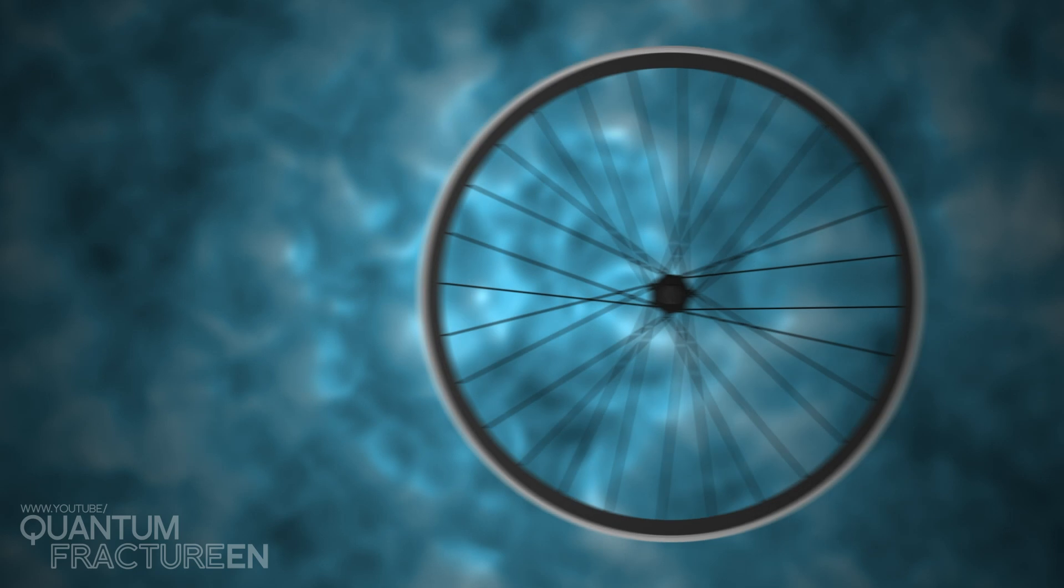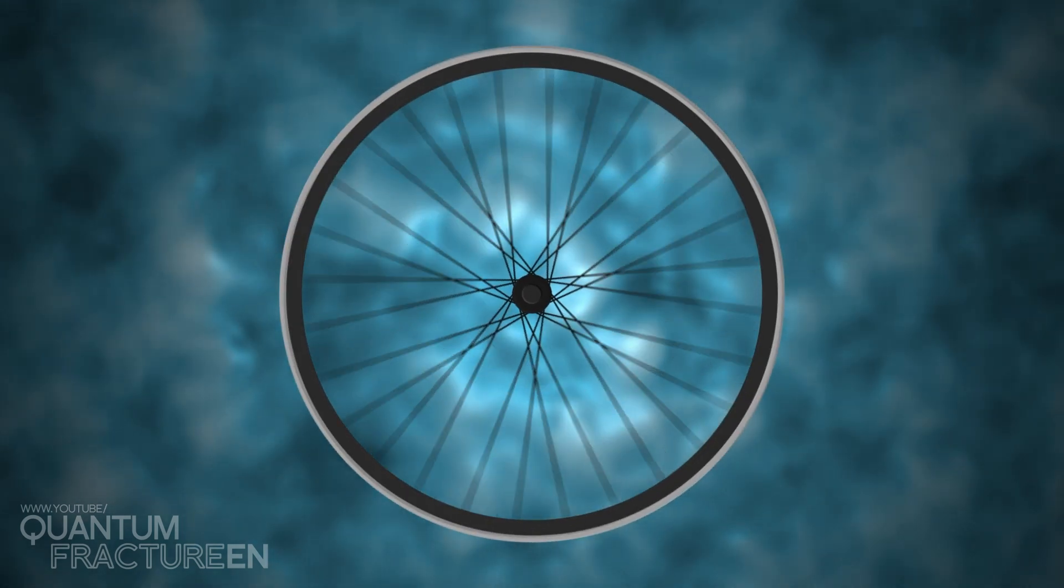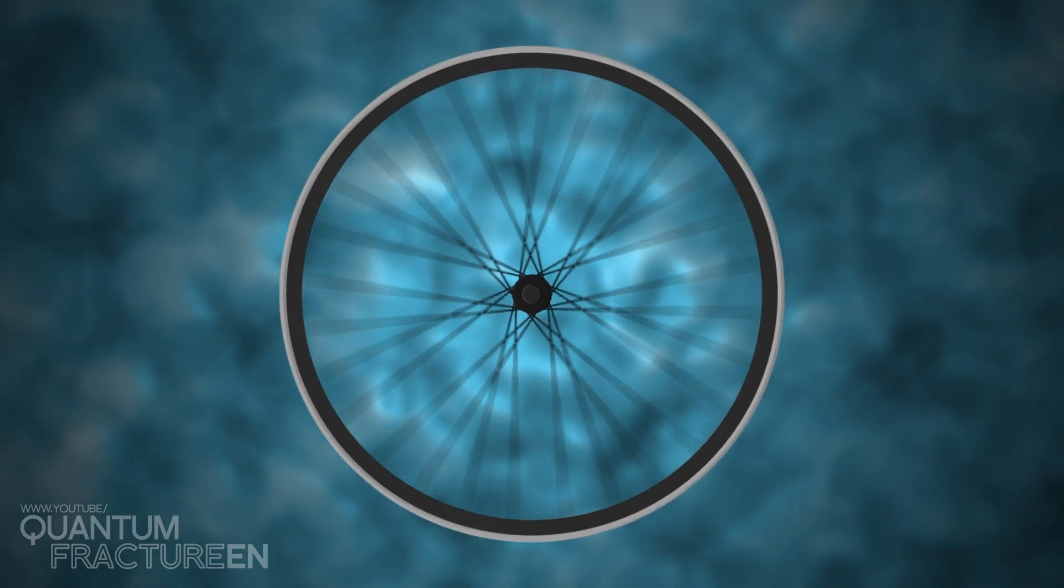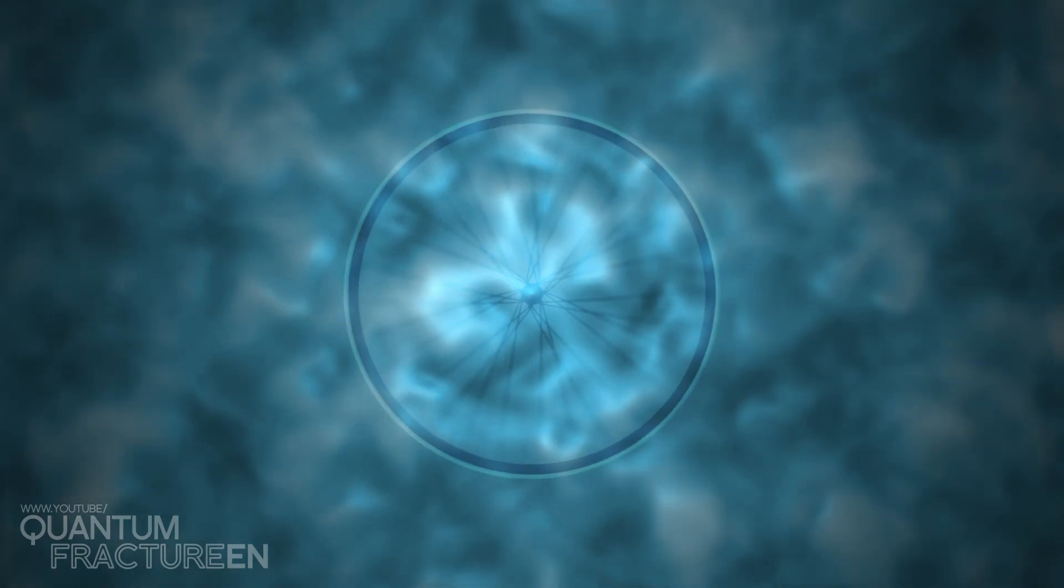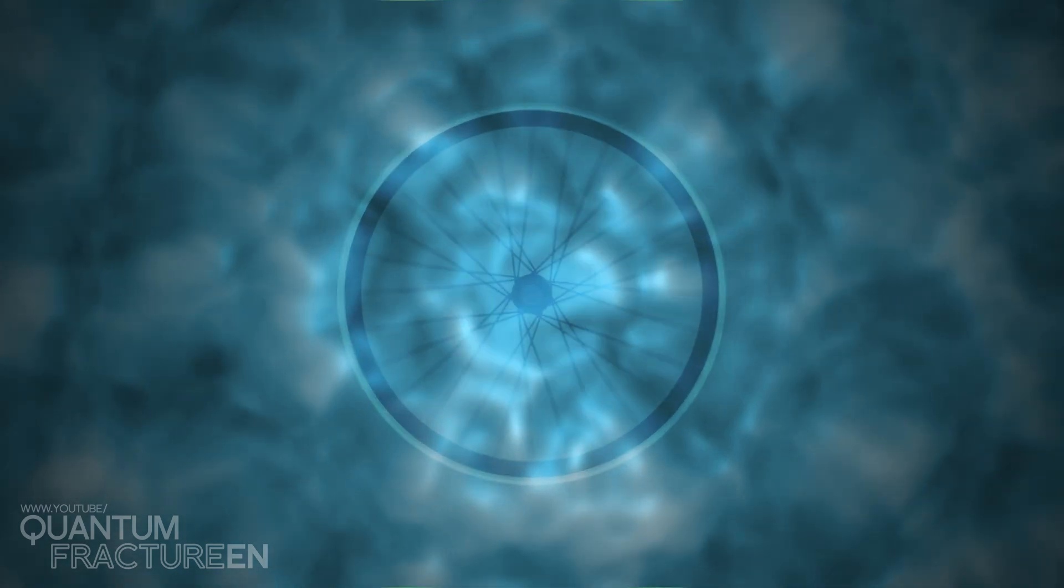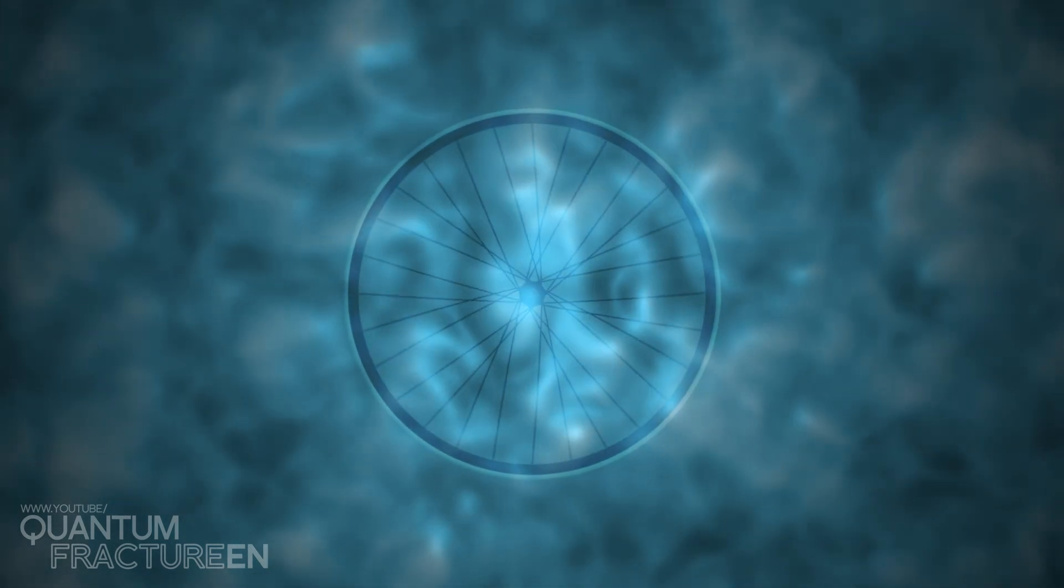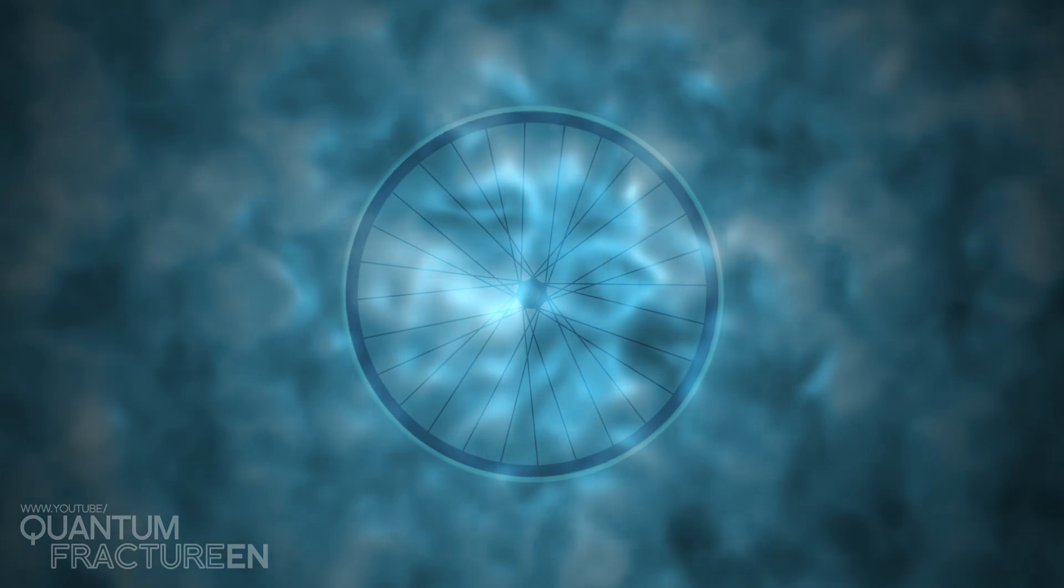Imagine you take a bike wheel, set it spinning, and drop it in a pool of water. What will happen to the wheel? As it spins, it's going to stir up the water around it, creating ripples. Little by little, it loses energy and stops spinning.